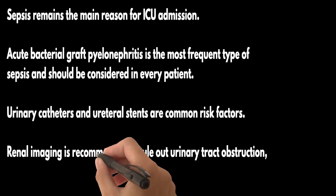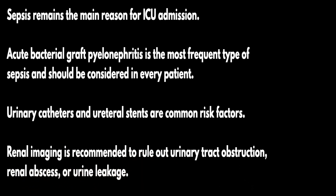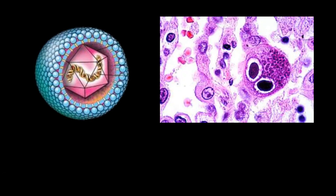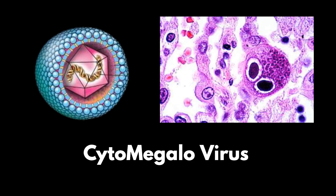Bacterial pneumonia is the second most common source of sepsis. Cytomegalovirus can cause life-threatening organ dysfunction and CMV viraemia should always be excluded. Rates of severe CMV disease have decreased owing to post-transplant prophylaxis and pre-emptive treatment strategies.